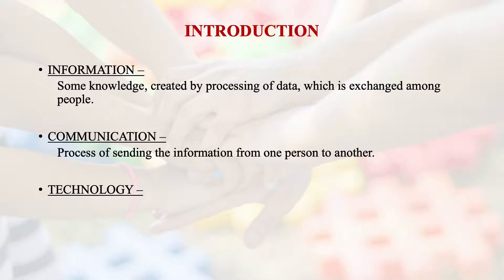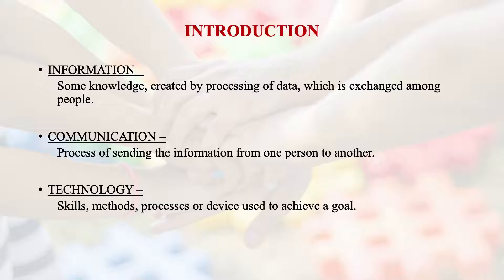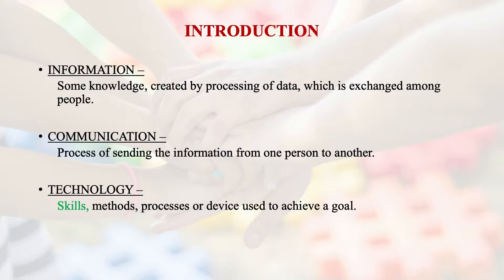Coming to the third aspect — technology. Technology is the kind of skills, methods, processes, or devices which are used to achieve a goal. The goal is to communicate the proper information to the stakeholder or concerned person. That is where we use technology. Technology involves skills, methods, processes, or devices used to achieve that goal. We will see what kinds of devices we can use for technology.